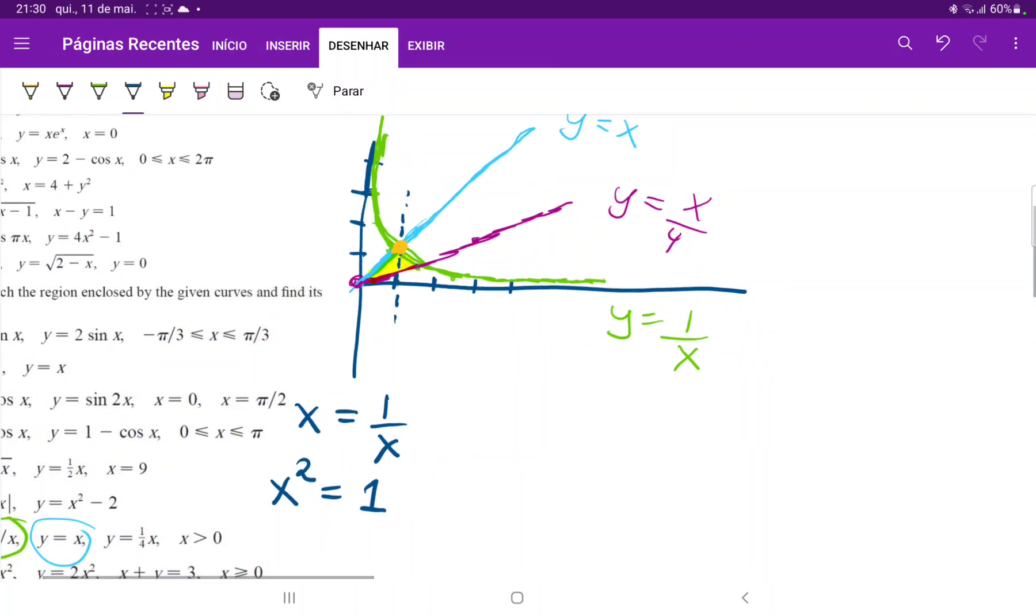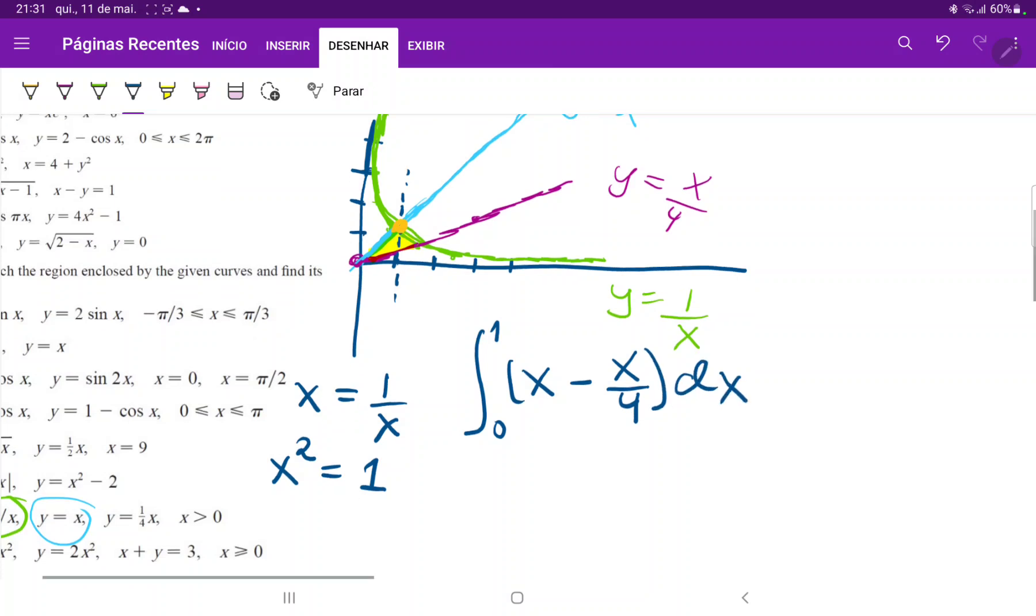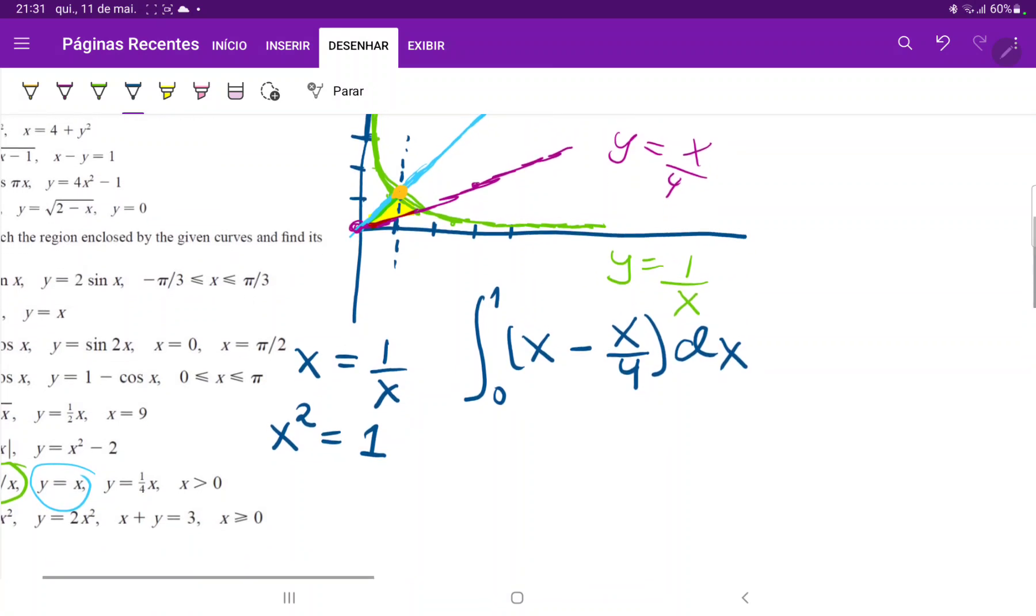So the first integral is the integral from 0 to 1 of, what is the upper function? The upper function is the blue one, so x, minus the lower function, x over 4 times dx. So that is one of our integrals, but we do have a second integral. We have a second integral from the orange point all the way to the pink point over here.